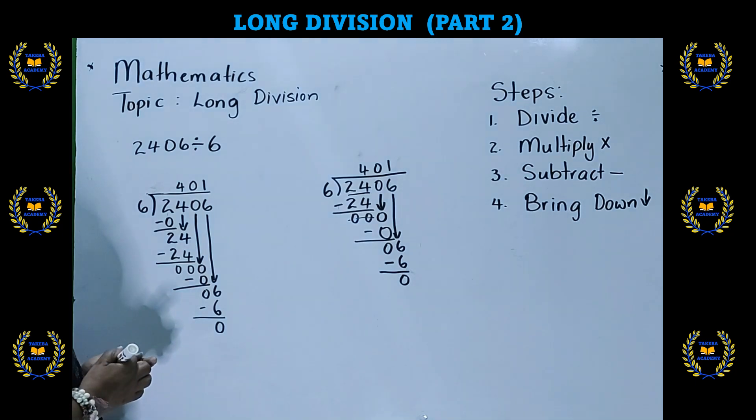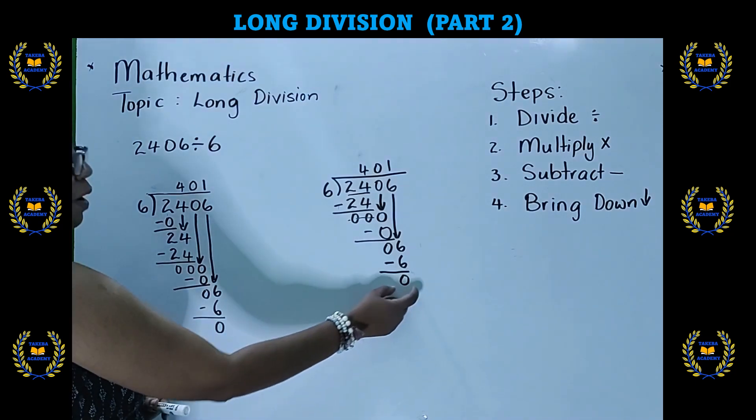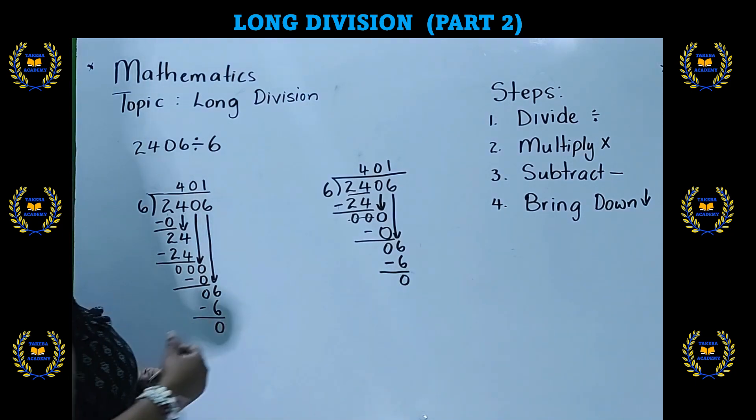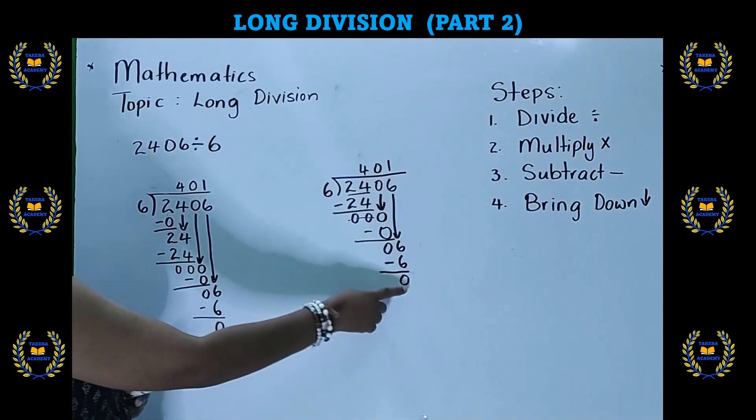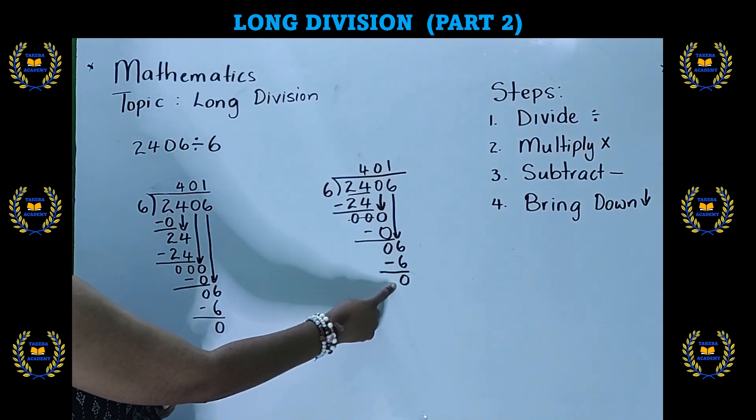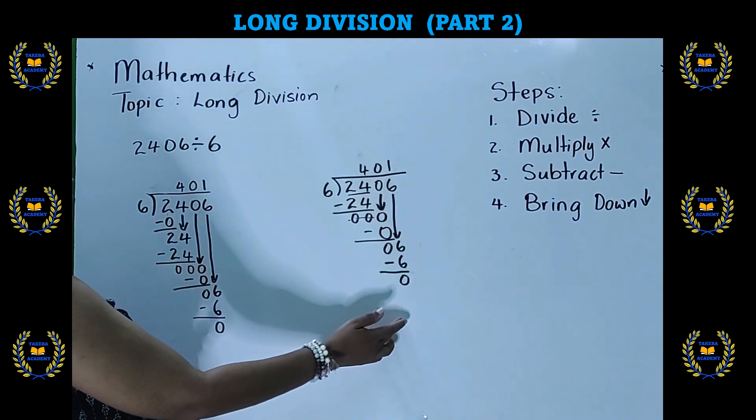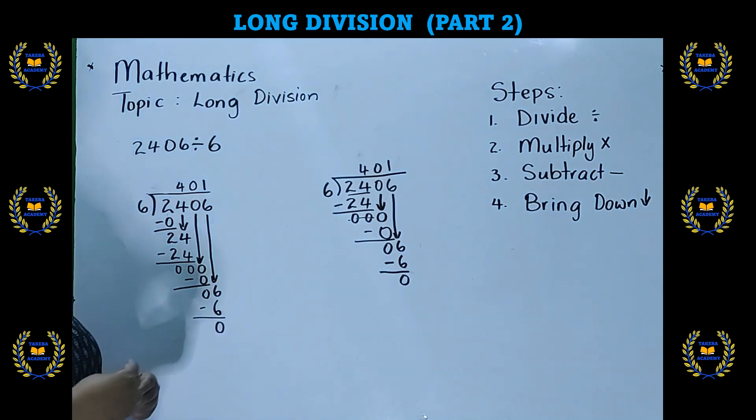Our next video will introduce long division when there is a remainder. What do we do when we have a remainder? So instead of having 0 at the end, what do we do when there's a number here that's greater than 0, we do not have any more numbers to bring down, how do we treat that remainder? Stay tuned. See you next time.